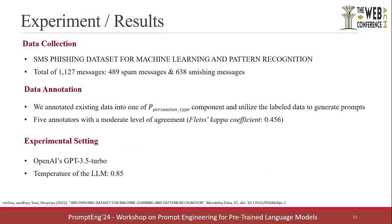Moving on to the experiment part, we utilized the SMS phishing dataset, a benchmark dataset by Mishra and Soni in 2022. This benchmark dataset comprises three types of SMS classifications: smishing, spam, and ham. Our interest exclusively lies in smishing and spam messages. Since the task of distinguishing non-ham messages from ham messages is much simpler, we neglected the ham messages. We have a total of 1,127 messages, comprising 489 spam and 638 smishing messages.